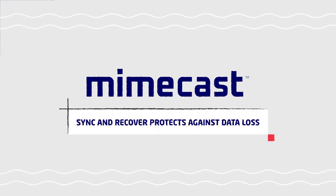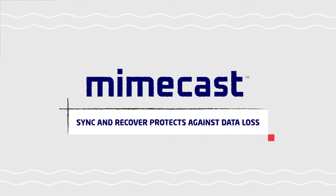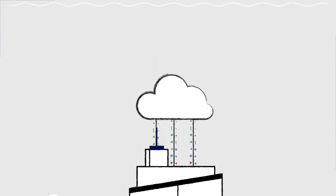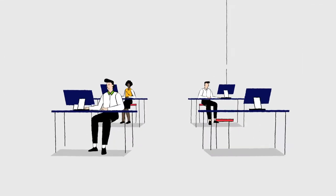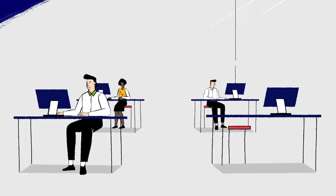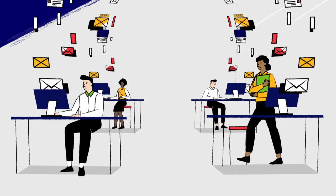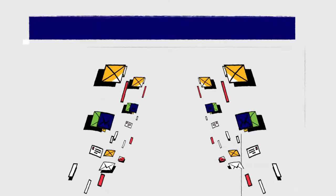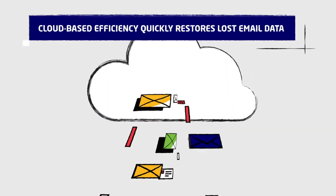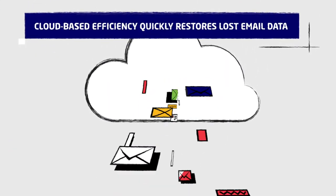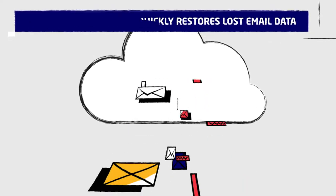Only Mimecast Sync and Recover protects against data loss caused by corruption and accidental or intentional deletion. Now organizations can prevent unnecessary downtime, while cloud-based efficiency quickly restores lost email data and does it without a drain on IT productivity.